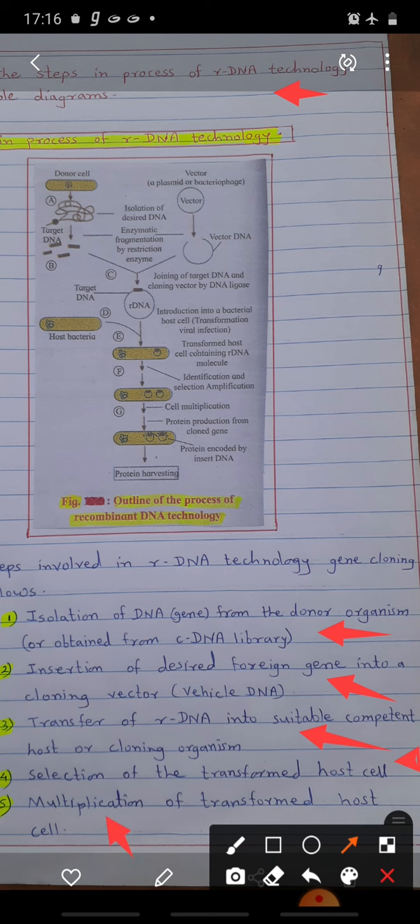For rDNA technology, the first step is isolation of DNA from donor organism. This is the donor cell with the desired gene. It is treated with suitable detergent. The genetic material is then isolated and purified.